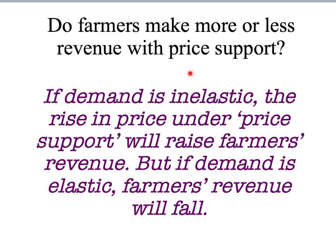The key to answering whether farmers make more or less revenue with a price support scheme can only be answered by understanding the own price elasticity of demand. If demand is inelastic, the rise in price leads to a relatively small drop in quantity and farmers get more revenue. If demand is elastic, the rise in price leads to a relatively big fall in quantity and farmers' revenue falls. Understanding elasticity of demand is critical to understanding the implications of government policy — in this case for farmers, but more generally whenever the government intervenes in a market.